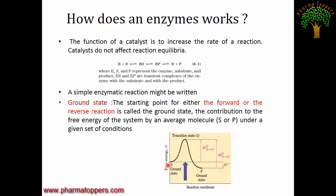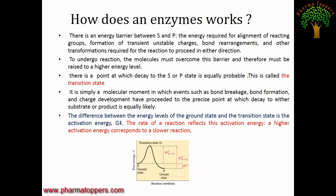The ground state represents the contribution of free energy of the system by an average molecule under a given set of conditions. Delta G‡ indicates how much energy is required to go from the ground state to the transition state. For an enzyme to initiate a reaction, it must overcome this energy barrier by going from the ground state to the transition state, which requires energy.